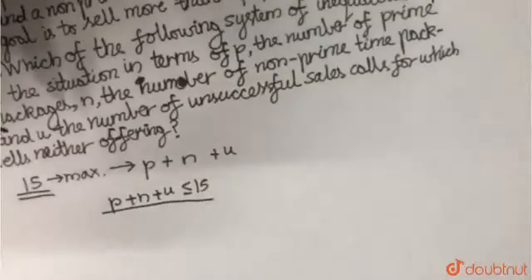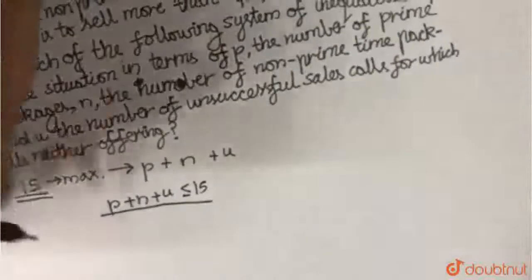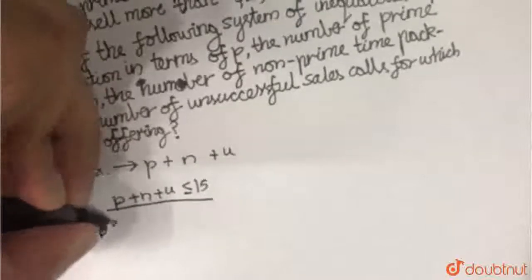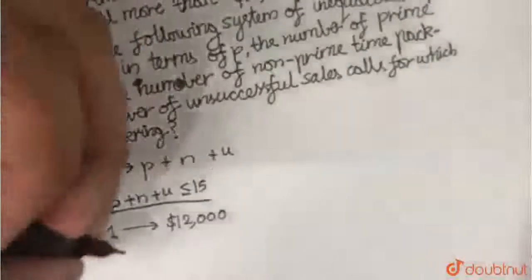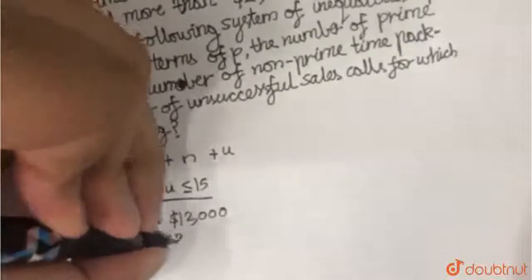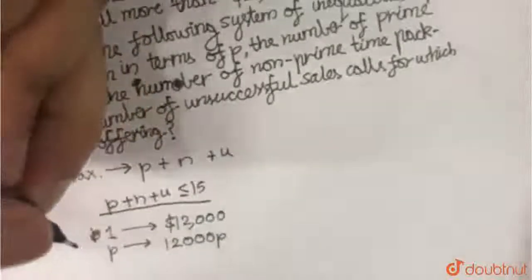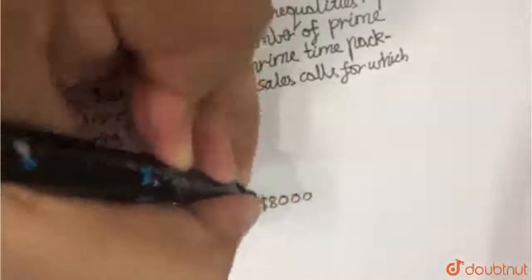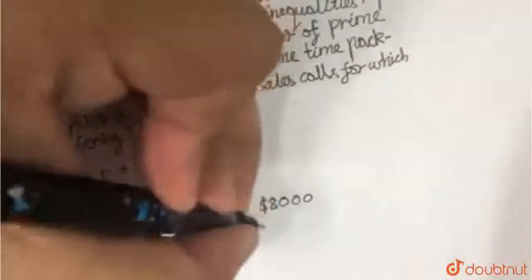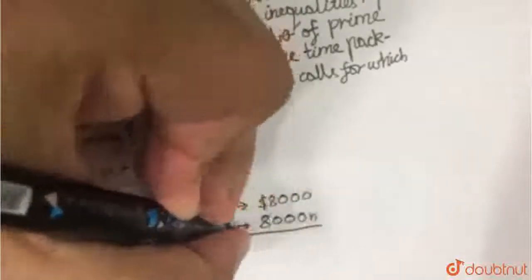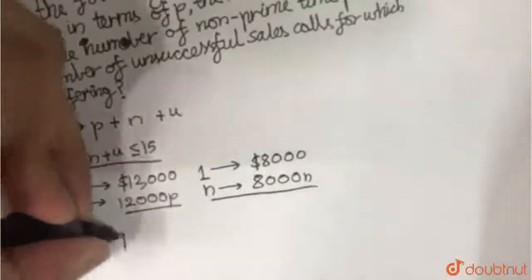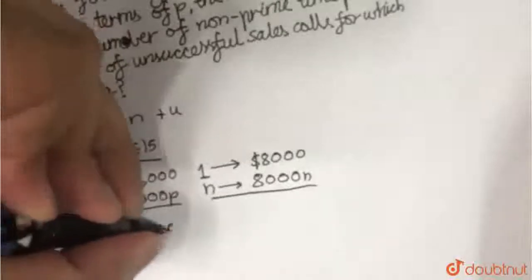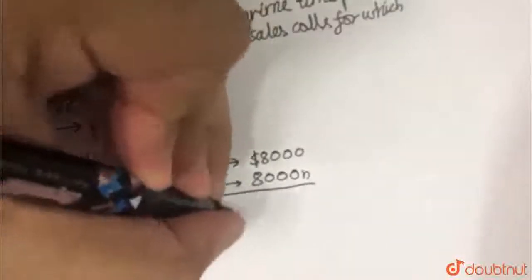She also has to raise more than $20,000 per week. One prime time package costs $12,000, so P prime time packages will cost $12,000 times P. Similarly, one non-prime time package costs $8,000, so N non-prime time packages will cost $8,000 times N. Therefore, our second inequality is: 12,000P plus 8,000N should be greater than or equal to $20,000.